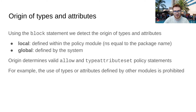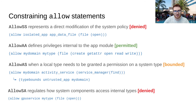Let's see how the concept of origin applies to the most common AVU, the allow statement. Based on the origin of source and target, there are four cases. Allow SS represents a direct policy modification, and it is therefore denied. Allow AA grants privileges to a source associated within the app, and it is permitted. Allow AS occurs when a local type needs to be granted a permission on a system type — this is granted, but we must ensure local type privileges are bounded to untrusted app, to avoid escalating privileges beyond what a normal app has.